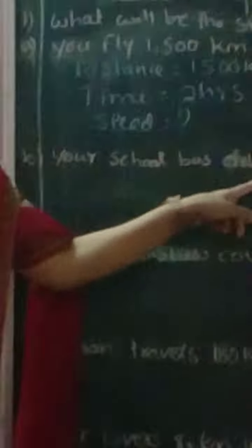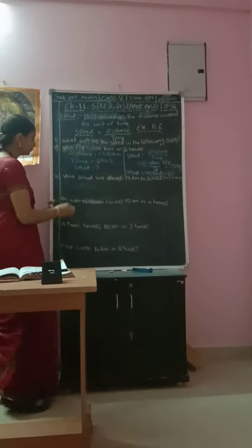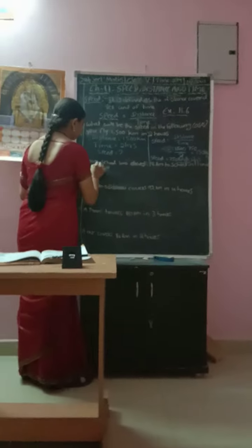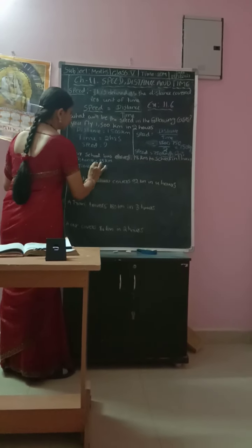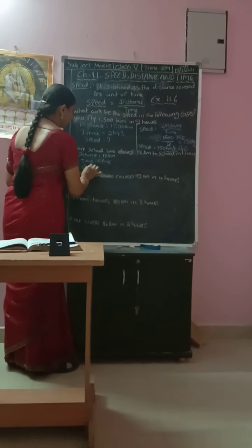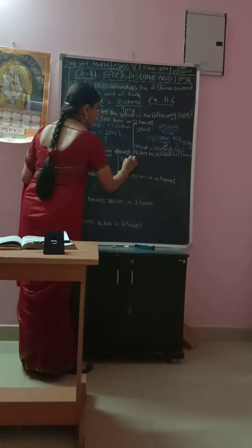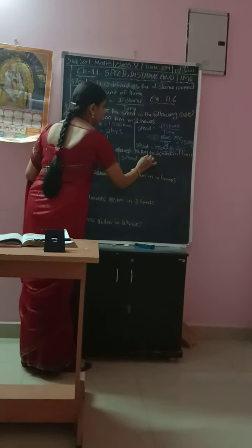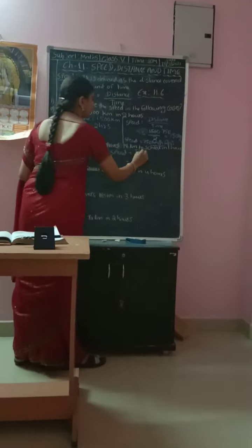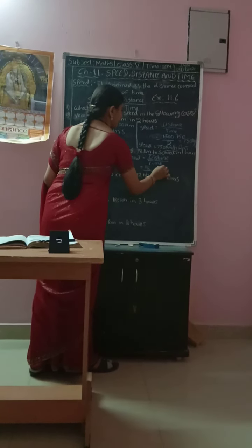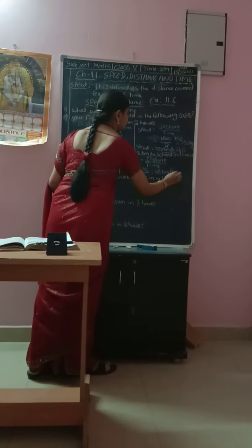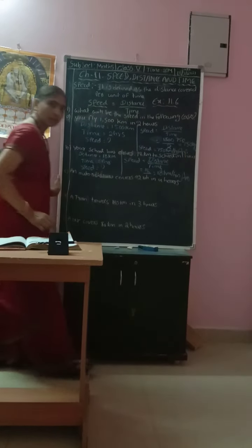This is the first problem. Now the second problem: your school bus drives 18 km to school in one hour. Distance is equal to 18 km and time is equal to one hour. Speed equals distance divided by time — 18 km divided by 1 — so that is 18 km per hour.